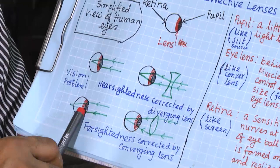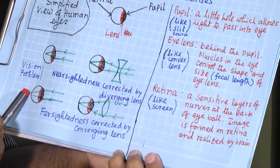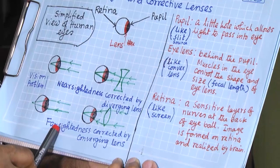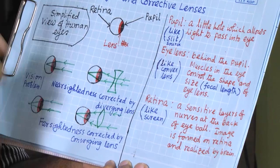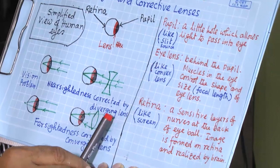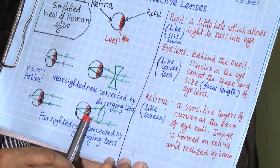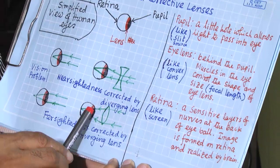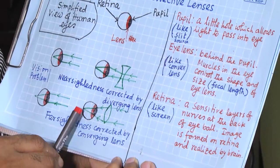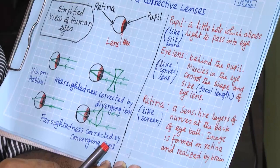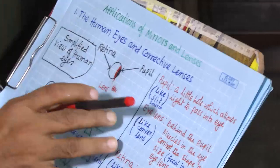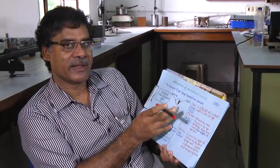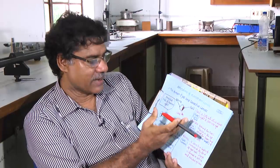Similarly, the other case may happen where the image is formed beyond the retina — this is called far-sightedness. In this case, if we use a convex lens in the spectacle, the rays will converge somewhat before and then the rest of the convergence is done by the eye lens so it will fall on the retina. This is corrected by the converging lens. This is a very important application of the convex and concave lens for human eyes and medical science.